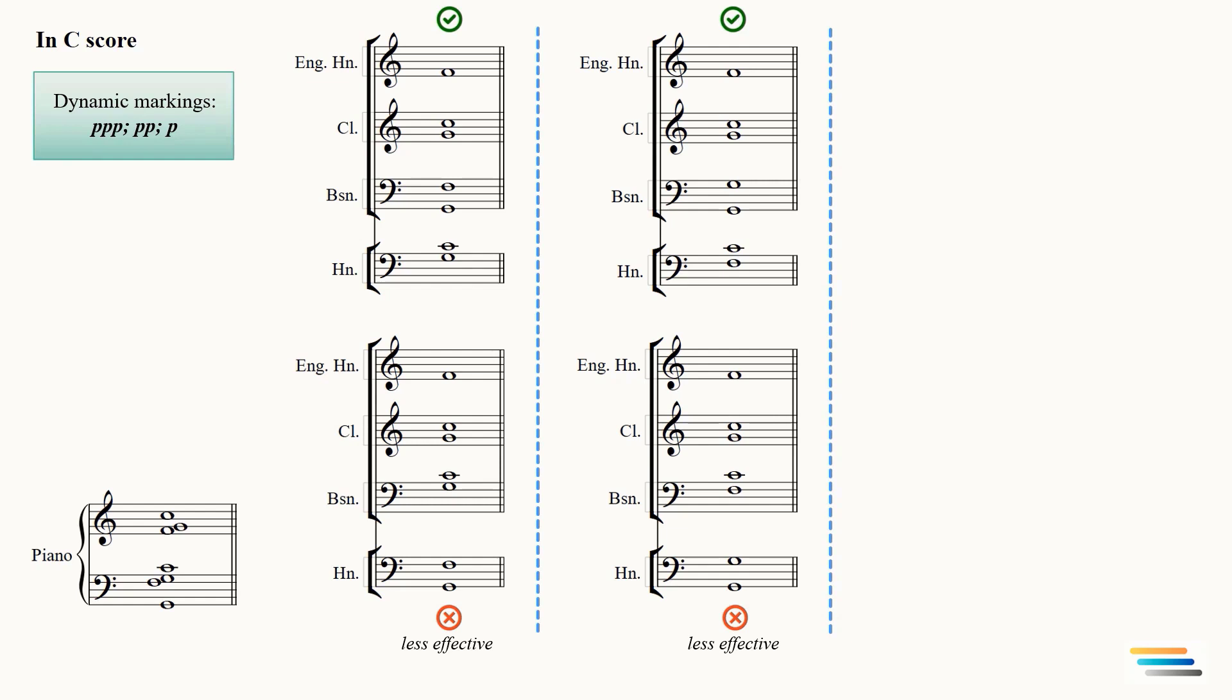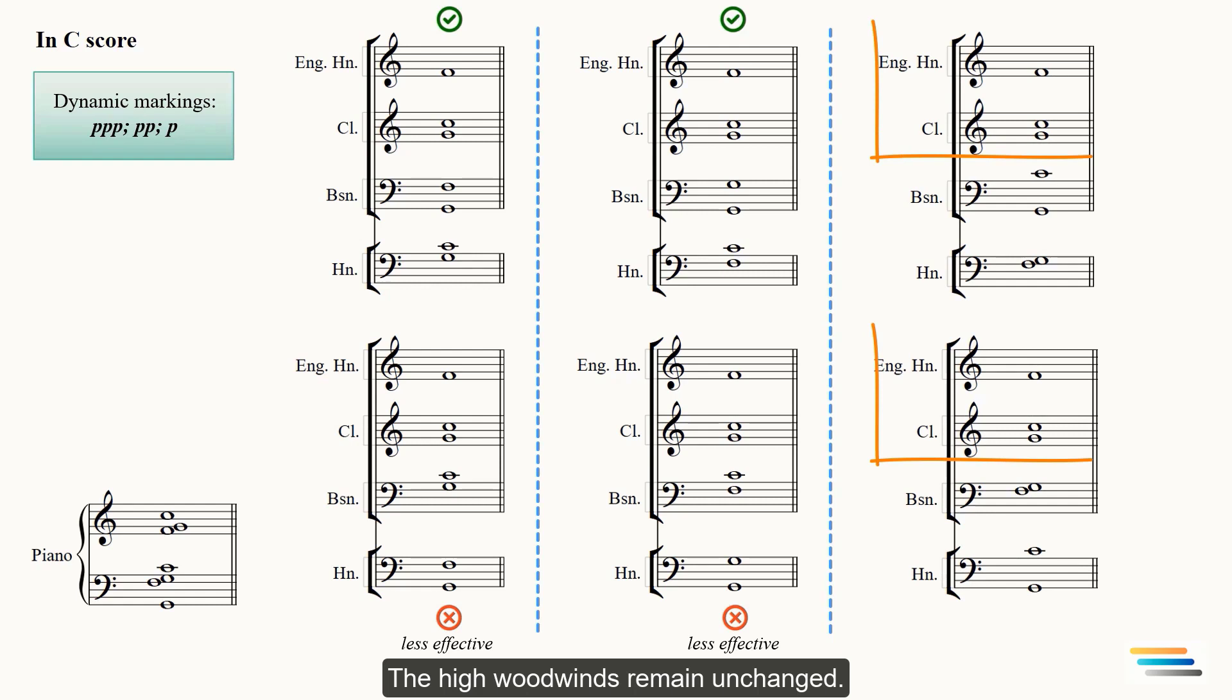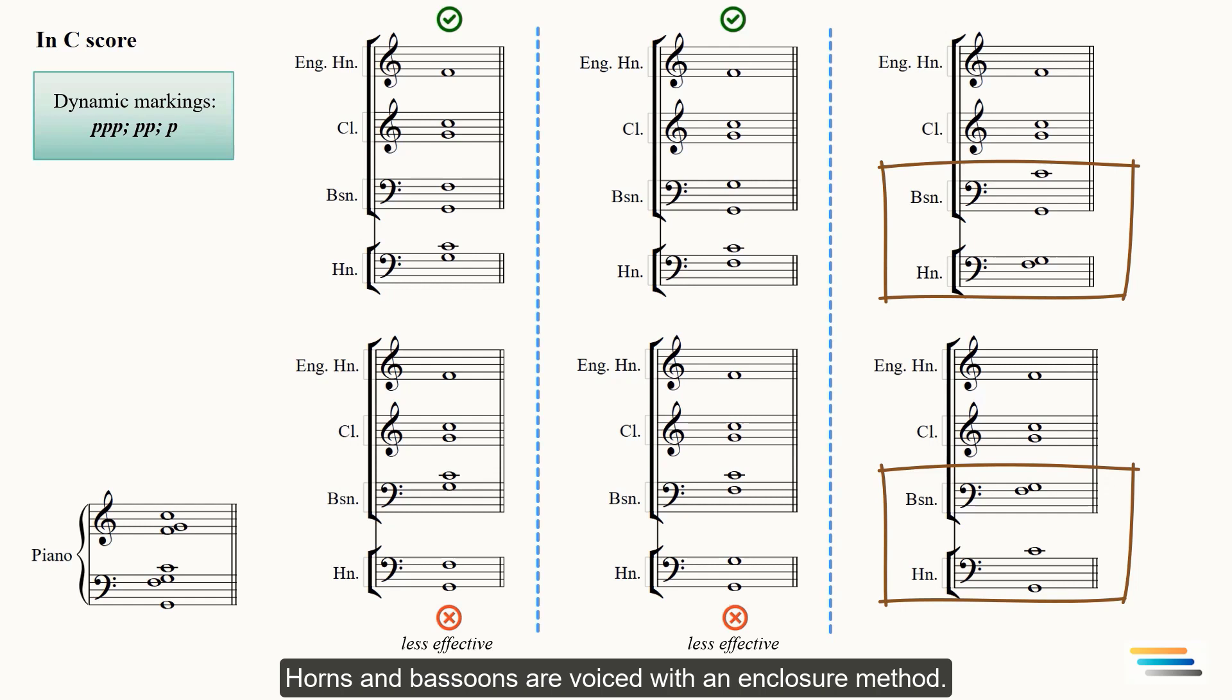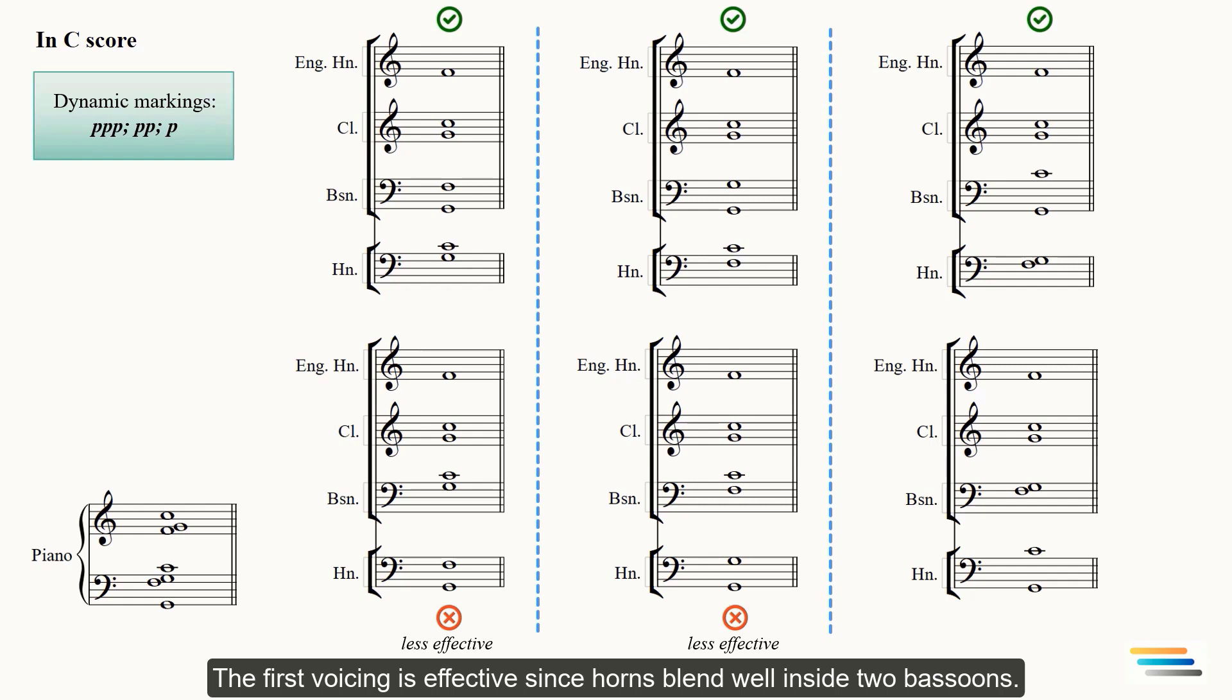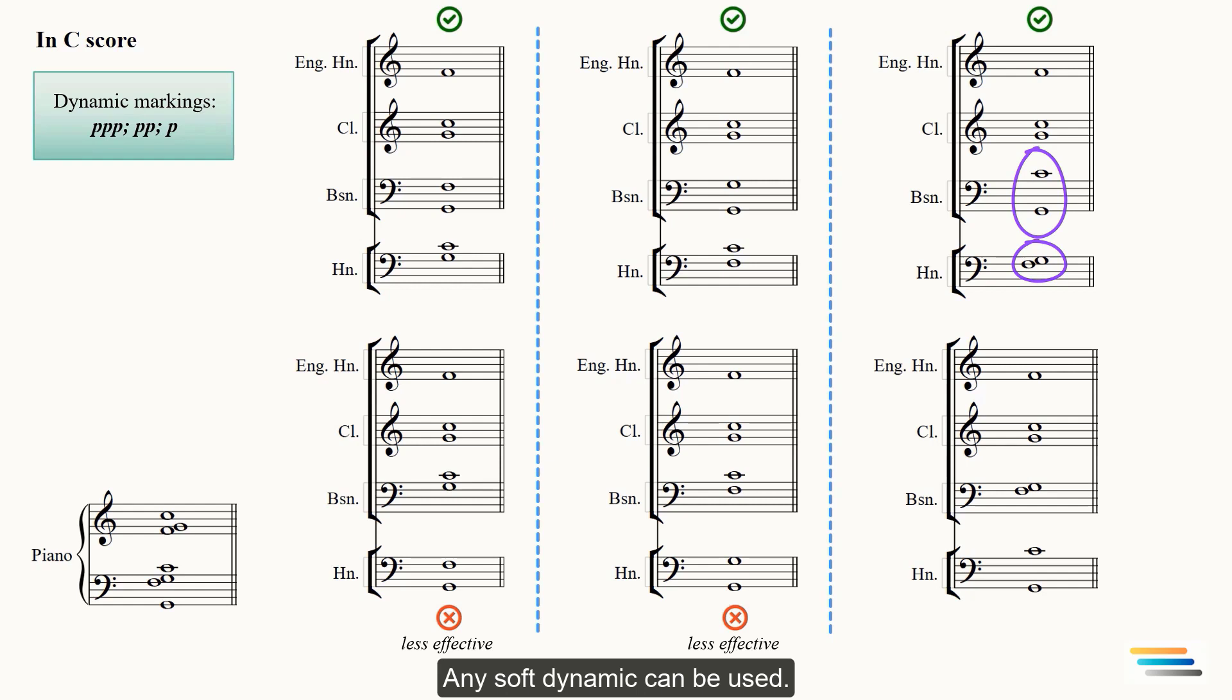Here's the same. The high woodwinds remain unchanged. Horns and bassoons are voiced with an enclosure method. The first voicing is effective since horns blend well inside two bassoons. Any soft dynamics can be used.